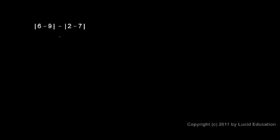And one more example here: the absolute value of 6 minus 9, minus the absolute value of 2 minus 7. I'll do this in a few steps. I'm going to rewrite the entire problem, but I'm going to do this computation and that computation. So I have the absolute value of — instead of 6 minus 9, I'm going to do that: 6 minus 9 is negative 3. So I have the absolute value of negative 3, minus the absolute value of 2 minus 7. And I'll replace 2 minus 7 with negative 5. I've just replaced the 6 minus 9 with negative 3 and the 2 minus 7 with negative 5.